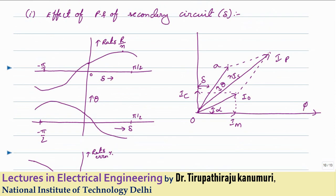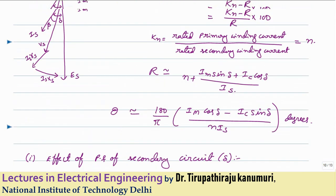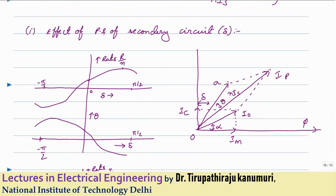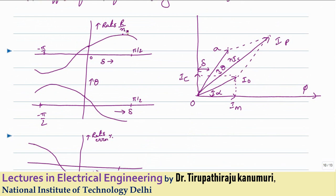Let us see the effect of the power factor of the secondary circuit on these errors. In the phasor diagram, I₀ is one vector and N×I_S is the secondary current referred to the primary side. Delta is the angle between I_S and E_S. We will examine how ratio error and phase angle error change as delta varies, while keeping N×I_S and I₀ constant. The transformation ratio R divided by N is first calculated; ratio error will be opposite to that since ratio error equals (N − R) divided by R.